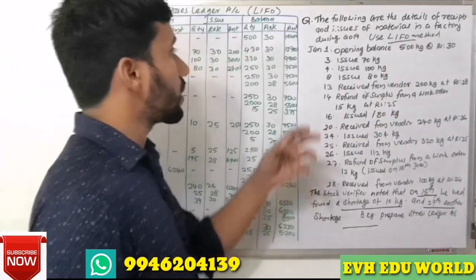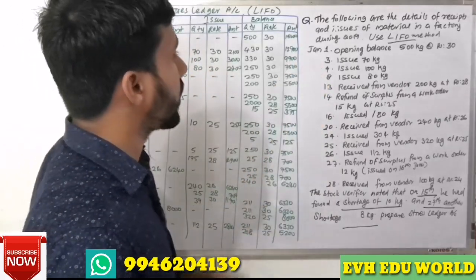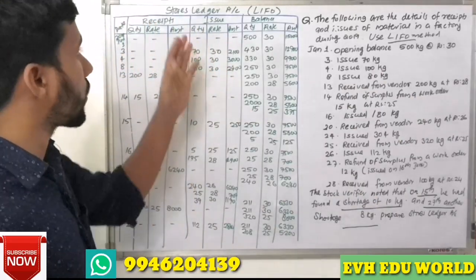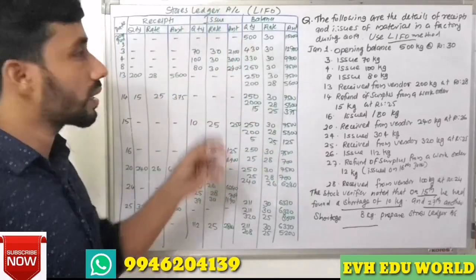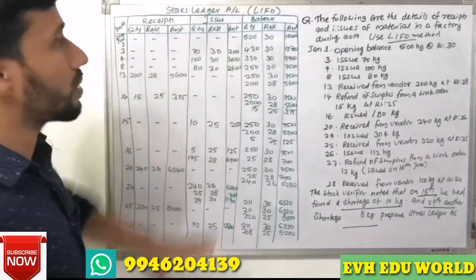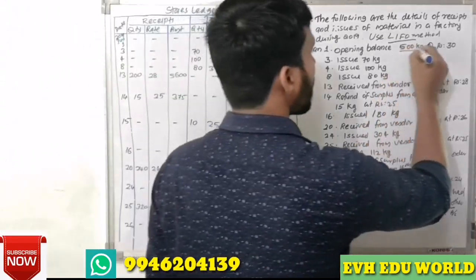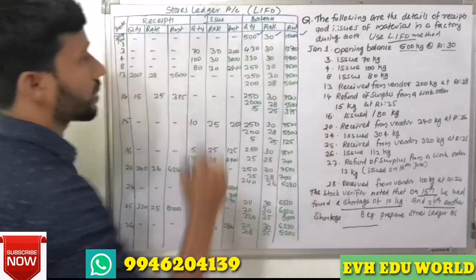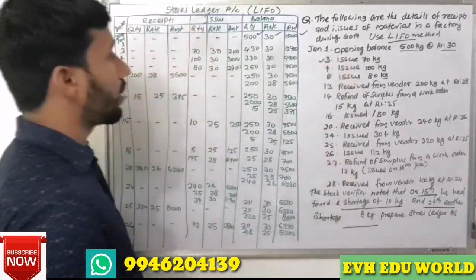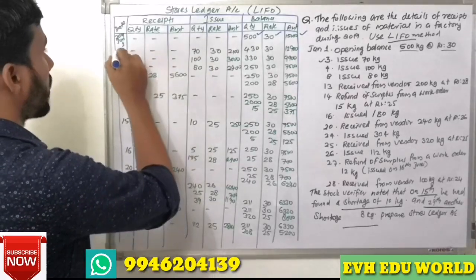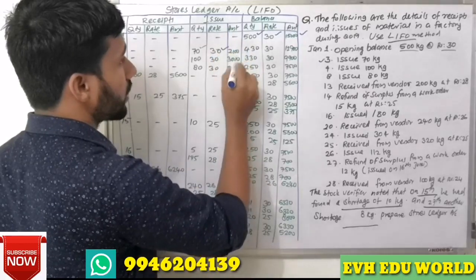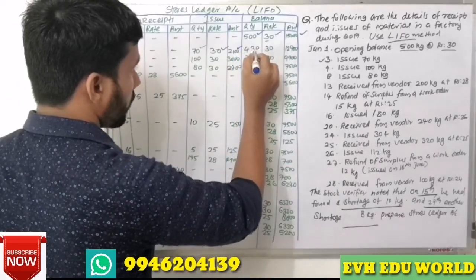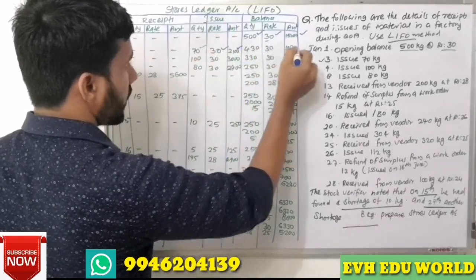Now we work through the solution. January 1st: opening balance 500 kg at Rs.30, total Rs.15,000. 3rd issue: 70 kg at Rs.30, amounting to Rs.2,100. Balance remaining: 430 kg at Rs.30, which is Rs.12,900.